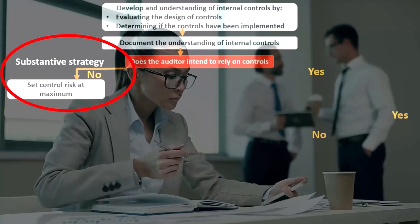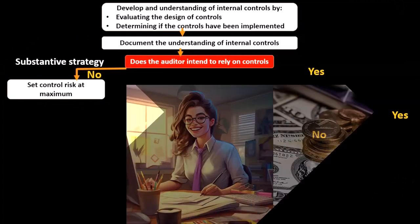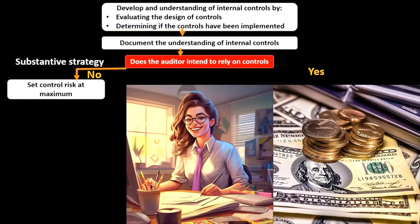And therefore, we need to do more testing on the substantive testing side. So what are we going to do? We're going to increase the amount of substantive testing, instead of wasting our time or going further thinking about testing the internal controls, which we've determined not to be sufficient and therefore not something that we rely on.